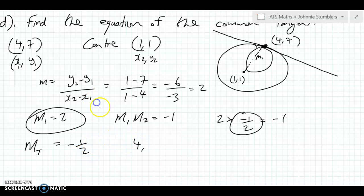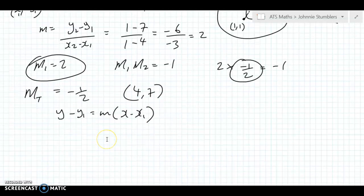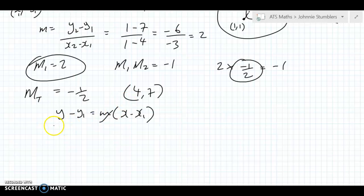And we know that 4, 7 is on the tangent. So we can use this thing here, y minus y1 equals m times x minus x1. And we fill that in. So we have everything we need. Because it's just going to be y minus 7 equals minus 1 half times x minus 4.